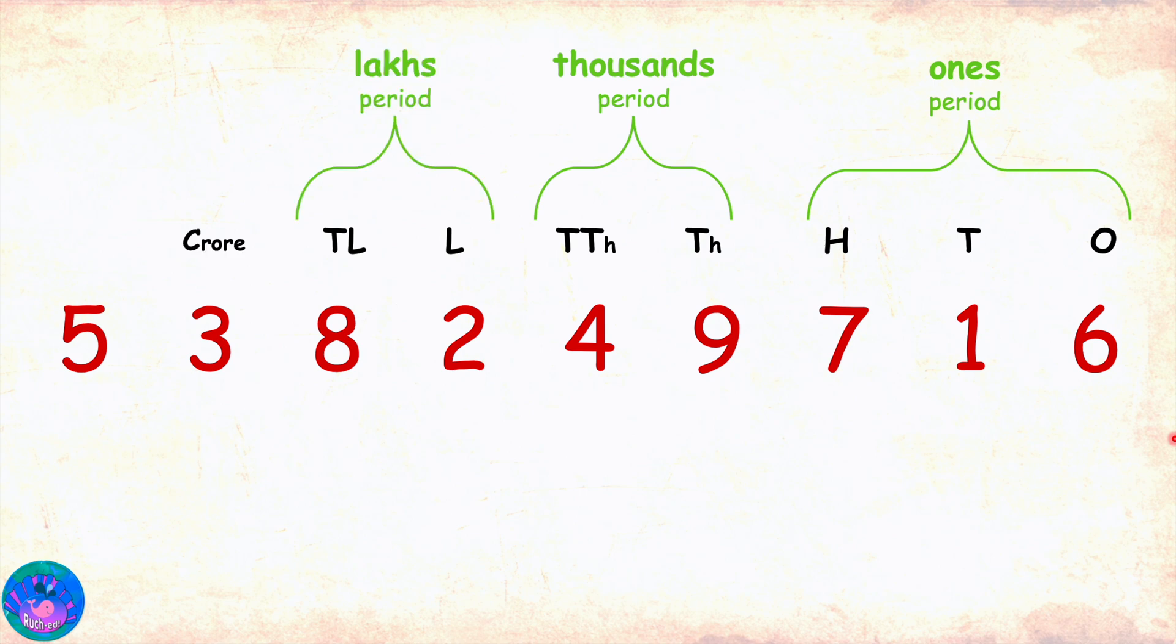The next place is crore, abbreviated to C, and ten crores, abbreviated to TC. The crore and ten crore places form the crores period. While writing the numbers, we again place commas between the periods, like this.